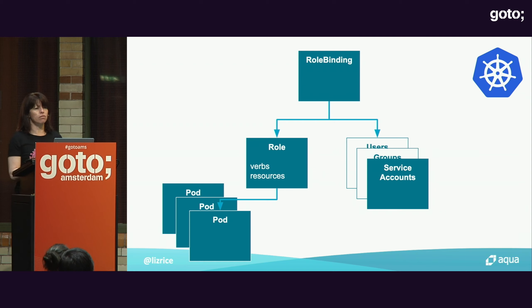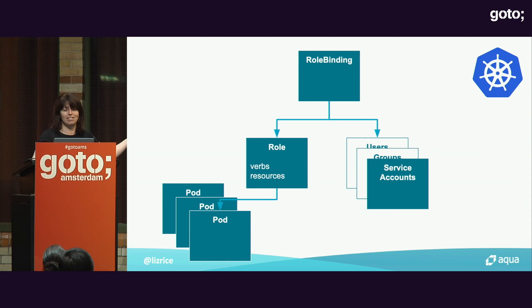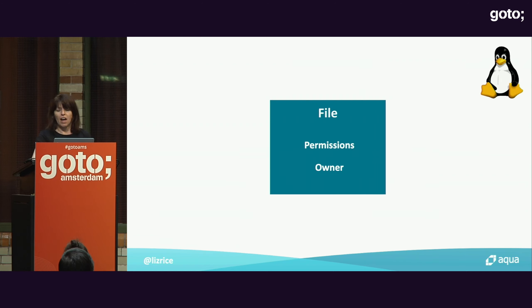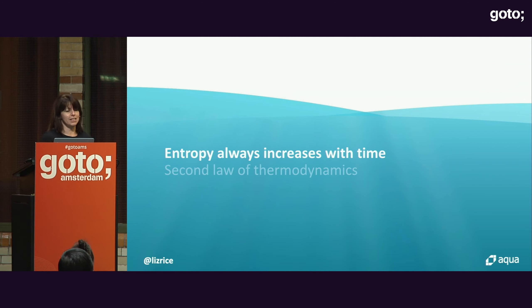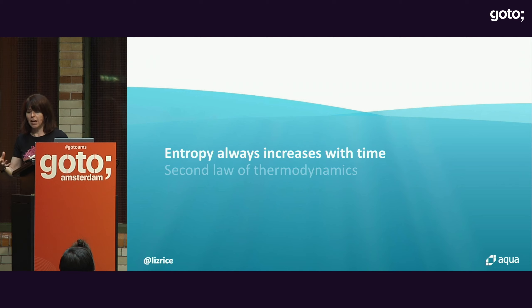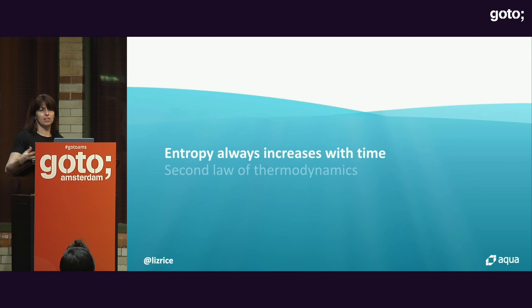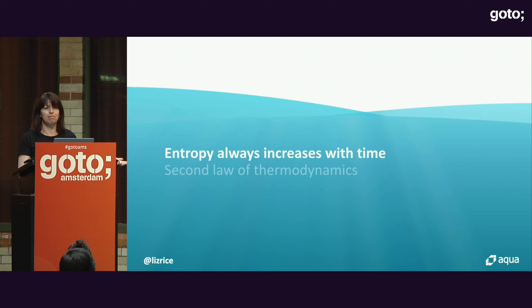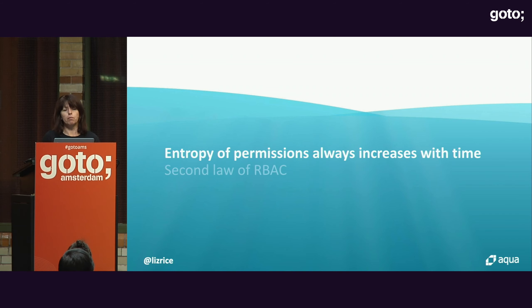If you've ever thought that RBAC is quite difficult to get your head around, this is a representation of why it's just more complicated. The problem with complexity is what you can call entropy. Cast your mind back to physics classes — the second law of thermodynamics says a system will tend to a state of maximum entropy, maximum randomness. I say the same thing is true with RBAC definitions: the entropy of permissions will always tend to increase over time.